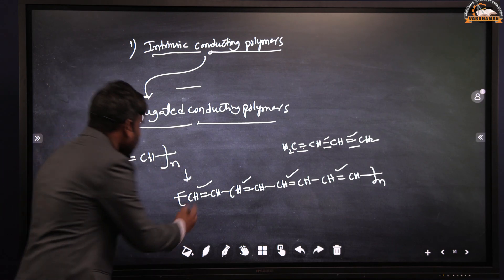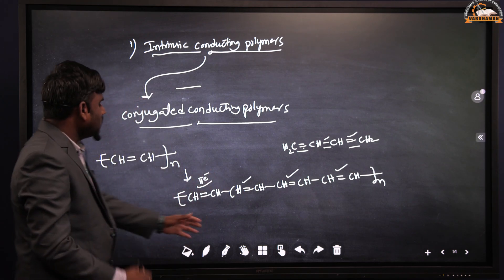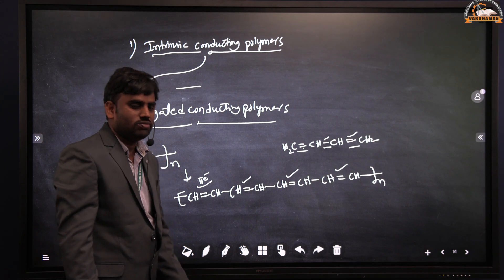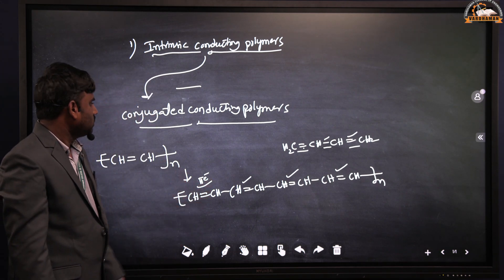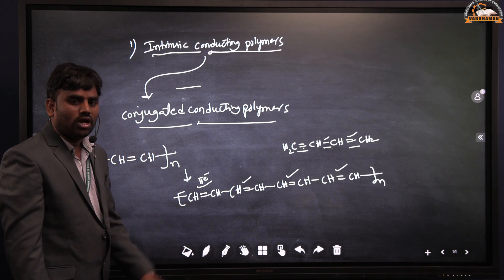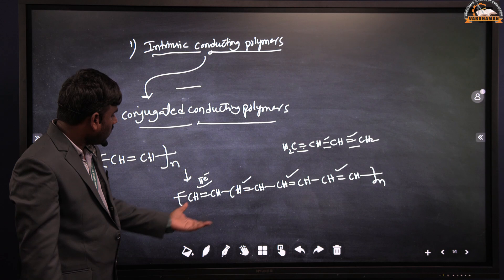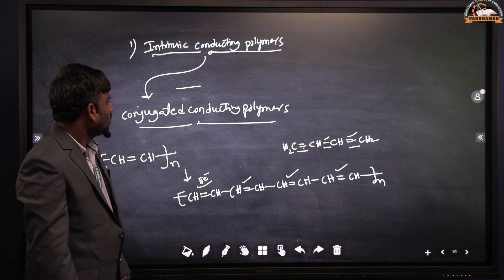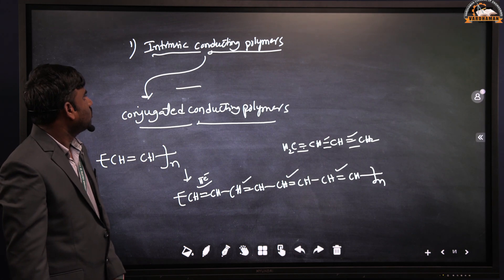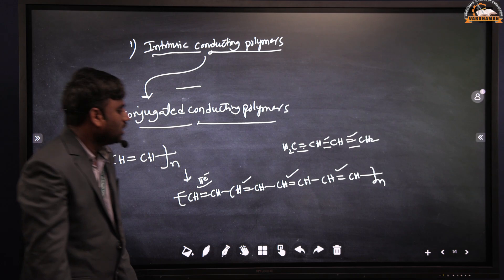These pi electrons are continuously moving, that is why this polymer exhibits the conductance property and is known as conjugated conducting polymers. Polypyrrole is also another example — with polypyrrole we can also explain the conjugated conducting polymers property. This is the first type in case of intrinsic conducting polymers.